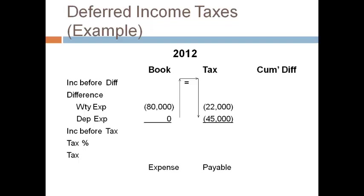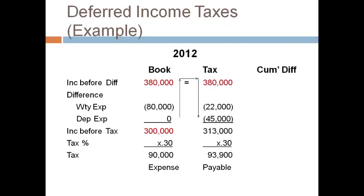I like to make one column zero and the other the difference amount so the difference equals the given amount. The book income before tax was given at $300,000. Multiply $300,000 by 30% to get the tax expense. Income before tax on the tax side is not given and you cannot compute tax payable without it. You have to start at income before tax of $300,000 on the book side and work up to plug $380,000 as income before differences. This is the same amount on the tax side since there is no difference. Write the amount in the tax column and work down to compute income before tax. Next, compute the cumulative book-tax difference for warranty expense. This is the first year, so the cumulative difference is the same as the 2012 difference of $58,000. For depreciation, the prior year cumulative difference was $75,000 and the current year difference is $45,000, for a total difference of $120,000.